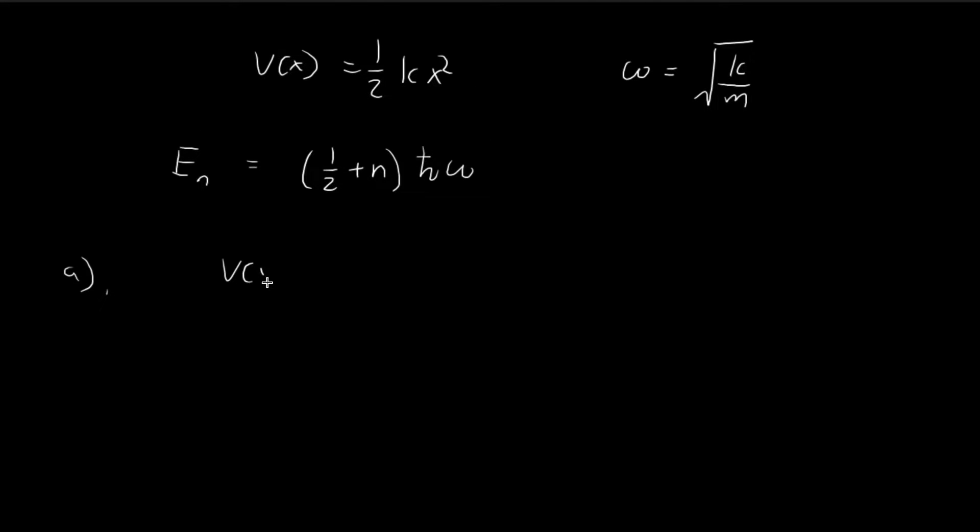And in part A of this problem, we have a similar potential, but now we also introduce a perturbation term. So this is the H prime term. This term represents the perturbation, and epsilon is supposed to be a very small number, so this represents a slight perturbation to the original potential. Now we want to find the allowed energy levels for this scenario. We can easily do this by combining the two terms together. We get one plus epsilon kx squared. So you can see that this is also a harmonic oscillator.